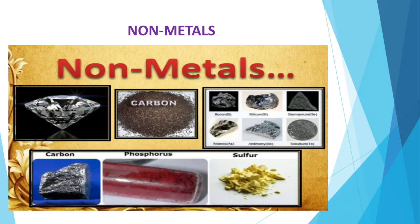This slide shows different examples of non-metals: carbon, phosphorus, sulfur, etc. You can find diamond and carbon — both are allotropic forms of the non-metal carbon. It means physically they are different but chemically they are made up of carbon. Phosphorus and sulfur are also examples of non-metals.